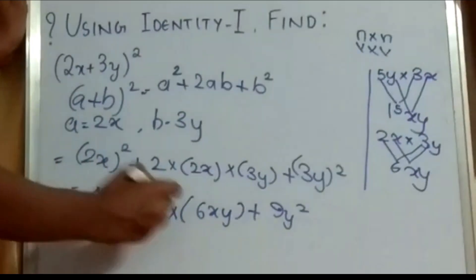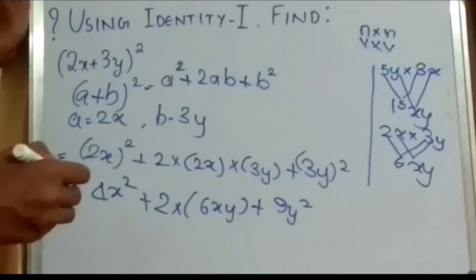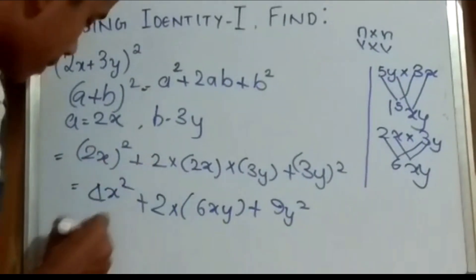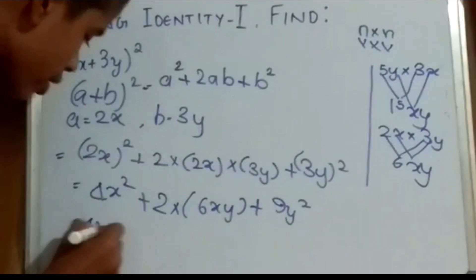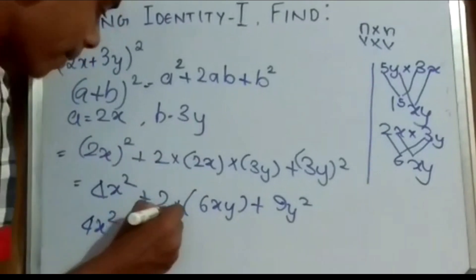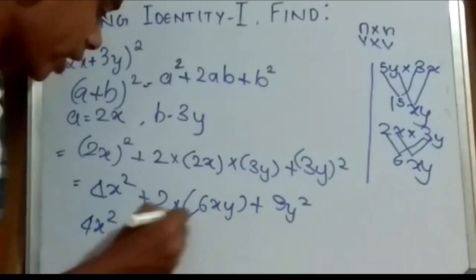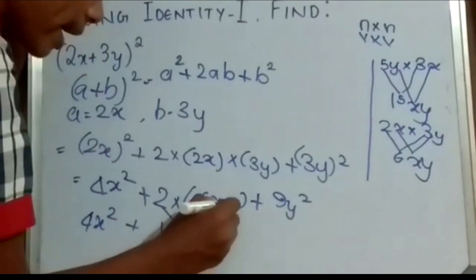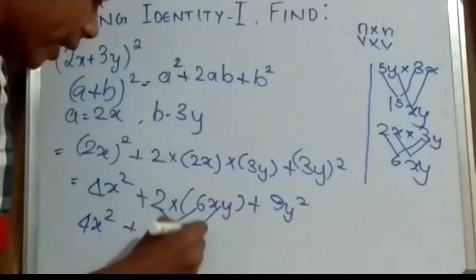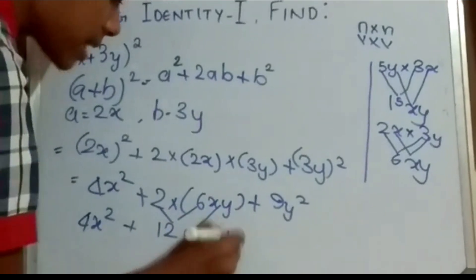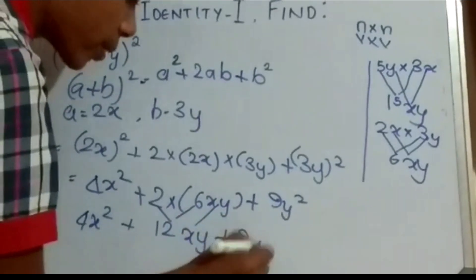In the middle term, 2 has no variables, so we just multiply the numbers: 2 × 6 = 12. Therefore, the final answer is 4x² + 12xy + 9y².